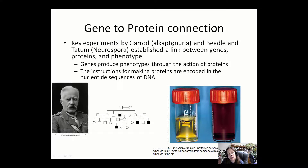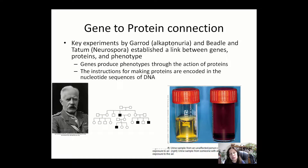Garrod established the link between a gene and an enzyme in the same pathway, calling it an inborn error of metabolism. An inborn error of metabolism is when there is a mutation in the gene that codes for an enzyme important in a metabolic pathway, and this mutation interferes with that pathway and leads to genetic disease. Alkaptonuria is a classic example of an inborn error of metabolism.